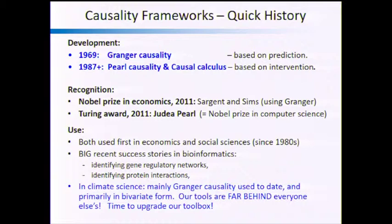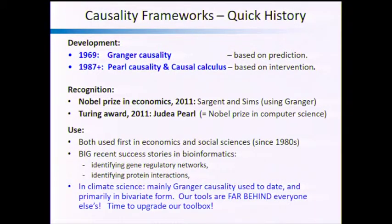If you look in the climate science literature, you find very little. You find Granger causality quite a bit for bivariate variables — mainly two-variable relationships. You find some research using Granger causality more broadly, but very very little on using Pearl causality; there are some researchers doing that but very few. Given that a lot of breakthroughs in bioinformatics came from these methods, and that some bioinformatics problems — like finding connections in the brain — are quite similar to finding connections in the atmosphere, I think it's time we upgrade our toolbox. I'm trying to do my part today by giving you the basics for how to do that.